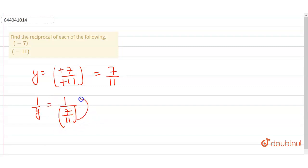This 11 goes into numerator, so now it is equal to 11 divided by 7.